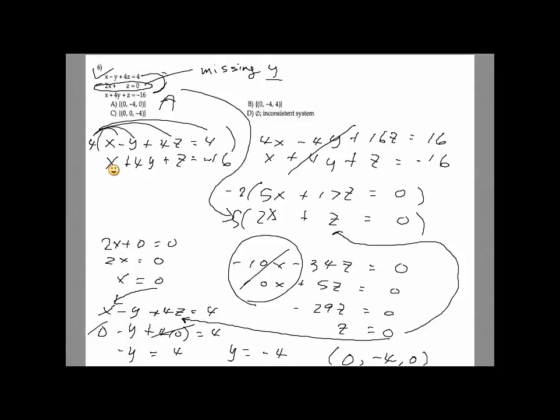If I pick the first one, x minus y equals 4z, and then if I pick that first one and the last one and eliminate the y - if I see the coefficient of y here is negative 1, coefficient of y here is 4, so I multiply the top row by 4, I can...